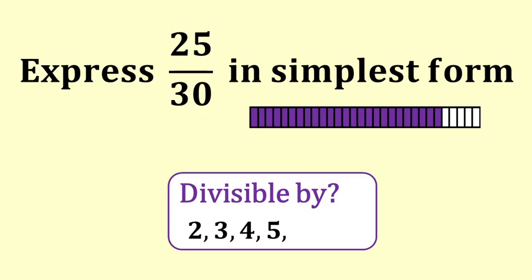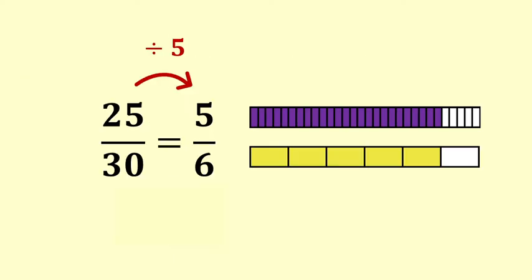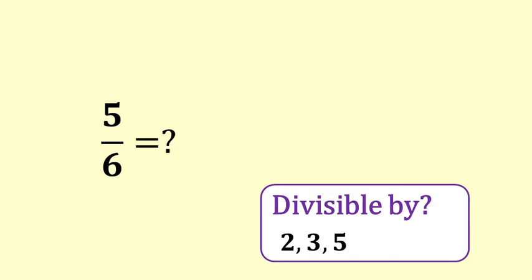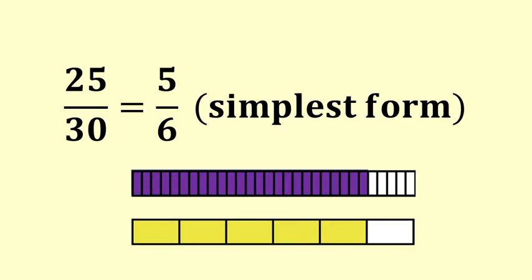Express twenty-five thirtieths in simplest form. Two doesn't go, three doesn't go, four doesn't go, but five does go. Whenever a number ends in five or zero then it is divisible by five. Twenty-five divided by five is five. Thirty divided by five is six. Is five sixths in simplest form? Yes, there is no number that goes into five and into six. After a while you get to recognize frequently used fractions in their simplest form.